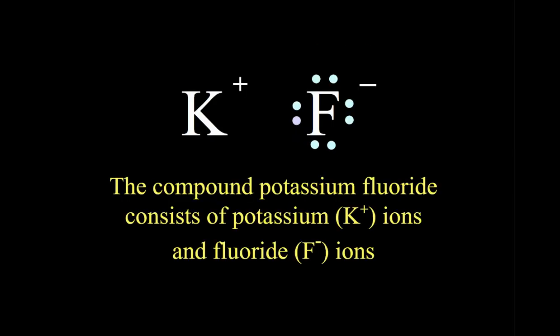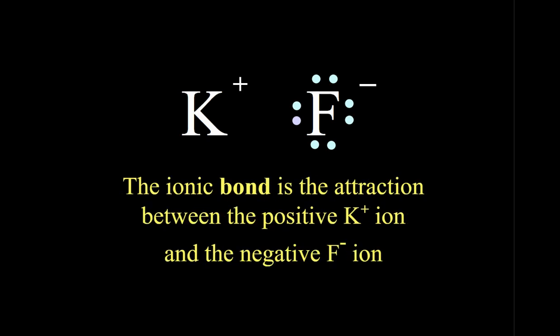So the compound of potassium fluoride actually consists of potassium plus one ions and fluoride minus one ions. They're held together by the electrostatic attraction between the positive ion and the negative ion. So that's what an ionic bond is. An ionic bond is the attraction between the positive and the negative cation and anion.